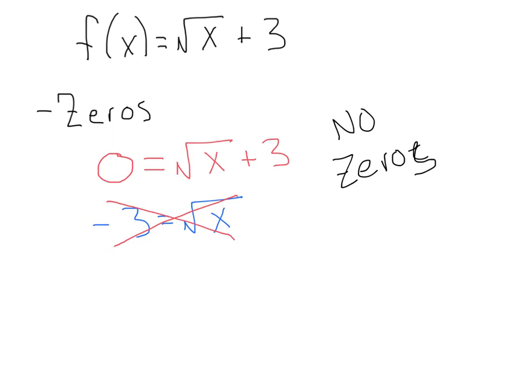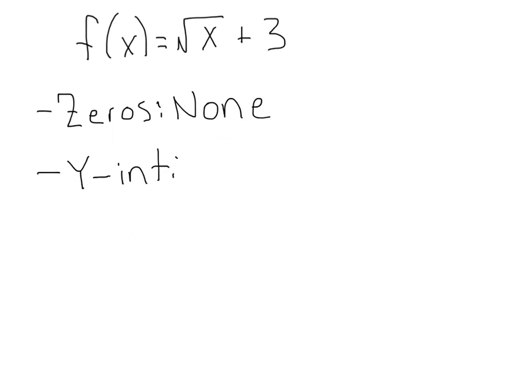To find our y-intercept, all we're going to do is plug in x = 0. So I have y = √(0 + 3). That gives me y = 3. So my y-intercept is at (0, 3).